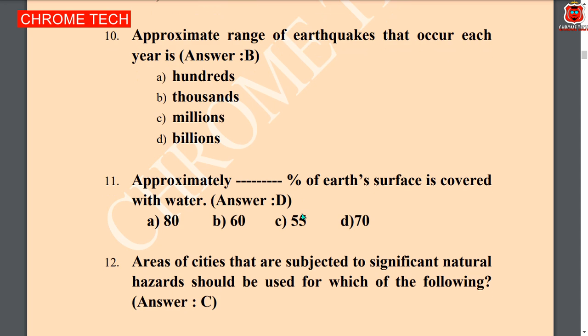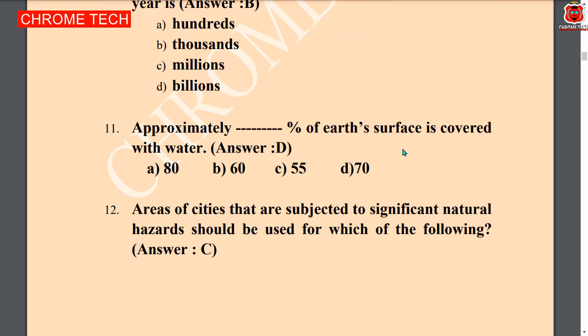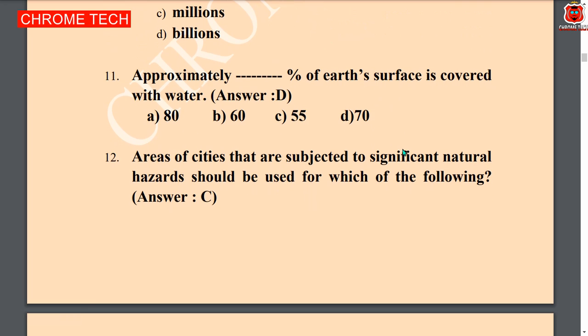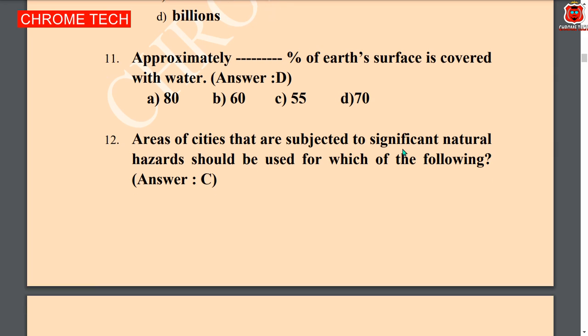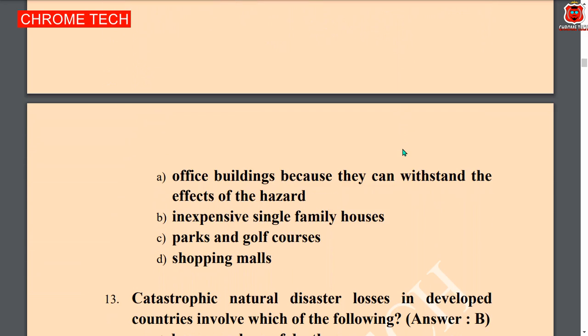Next question: approximately what percentage of earth's surface is covered with water — 70 percent. 70 percent is the correct answer. Next question: areas of cities that are subjected to significant natural resource risk should be used for which of the following — option C, parks and golf courses, is the correct answer.